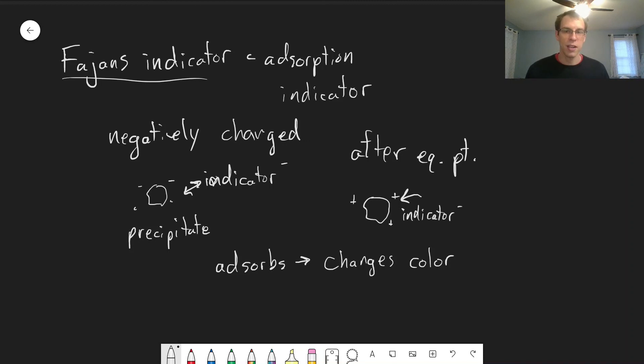Now there's some specific indicators and ways that we can use indicators that are listed in your textbook. And you can look at table 7-1 for specific examples.